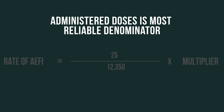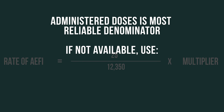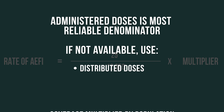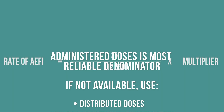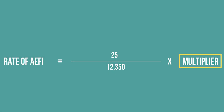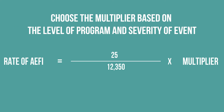The number of administered doses is the most reliable denominator to use. However, if this number is not available, you can use another denominator — each has its own limitations. You could use distributed doses, but since this number is typically greater than the administered number, you may underestimate the rate. You could multiply coverage by population, but this may be less accurate due to coverage variations, or you could use the target population, which may also lead you to underestimate the rate.